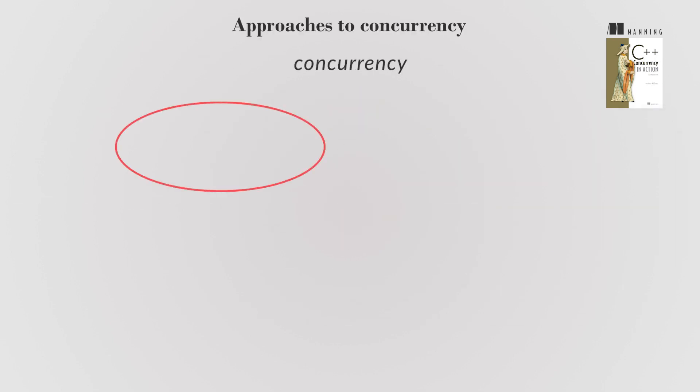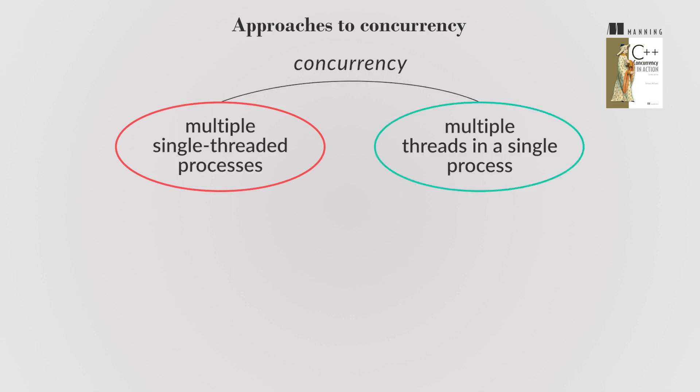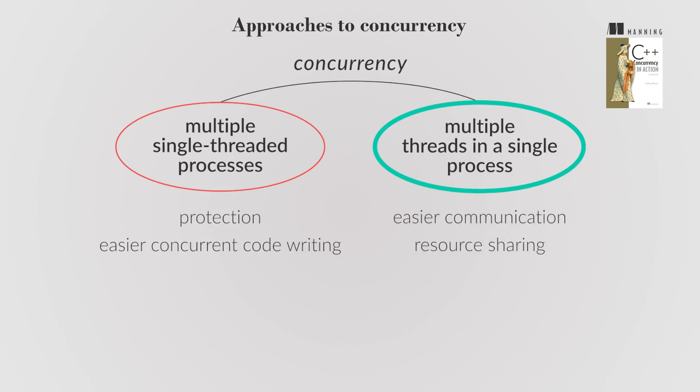Concurrency can be approached through multiple single-threaded processes or multiple threads in a single process. While multiple processes offer protection and easier concurrent code writing, multiple threads provide easier communication and resource sharing. This book focuses on using multi-threading for concurrency in C++.